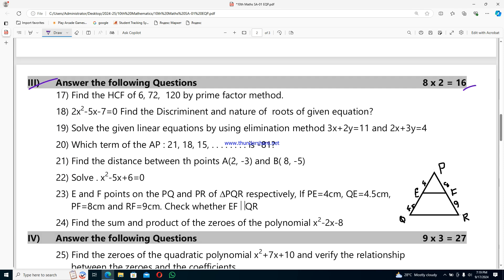Third row for 16 marks. Question 17: find the HCF of 6, 72, and 120 by prime factor method. Question 18: find the discriminant and nature of roots of given equation. Question 19: solve the given linear equations by using elimination method. The equations are 3x+2y=11 and 2x+3y=4.